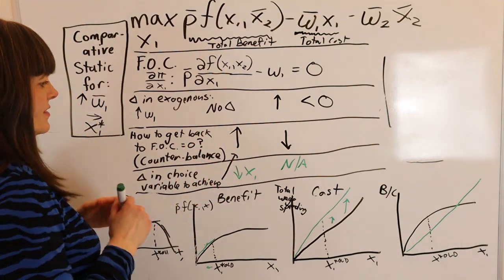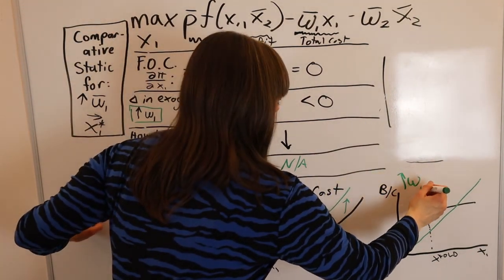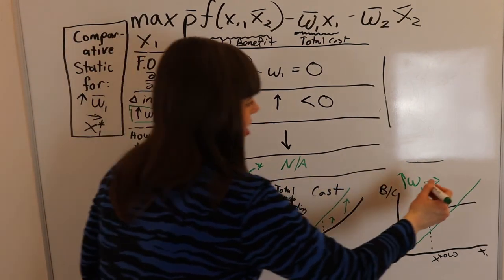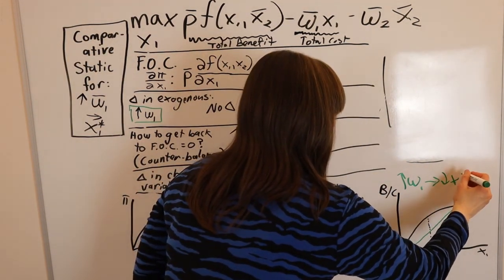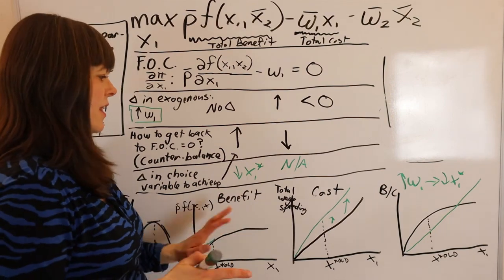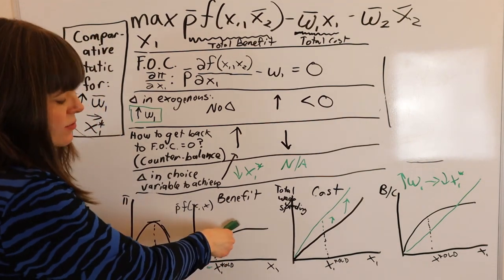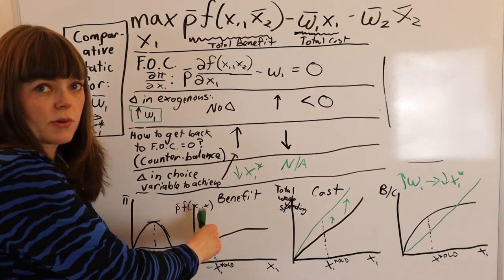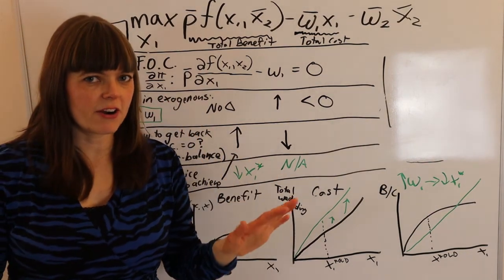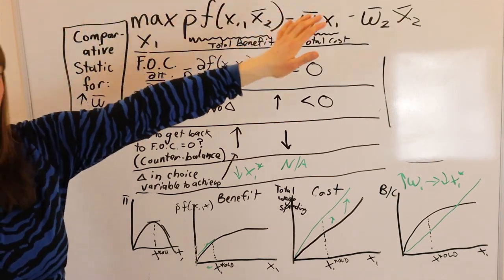So we have our comparative static result: we increased W1, and that led to a decrease in X1 star — which is what we were trying to find out. Eventually we'll be able to think about how much it decreases based on how strong the curvature is. If the benefit curve is really curvy, decreasing X1 a little bit changes the slope a lot. But we won't do that right now. What I've just shown you is comparative statics for an increase in the wage on the number of workers that this company is going to hire.